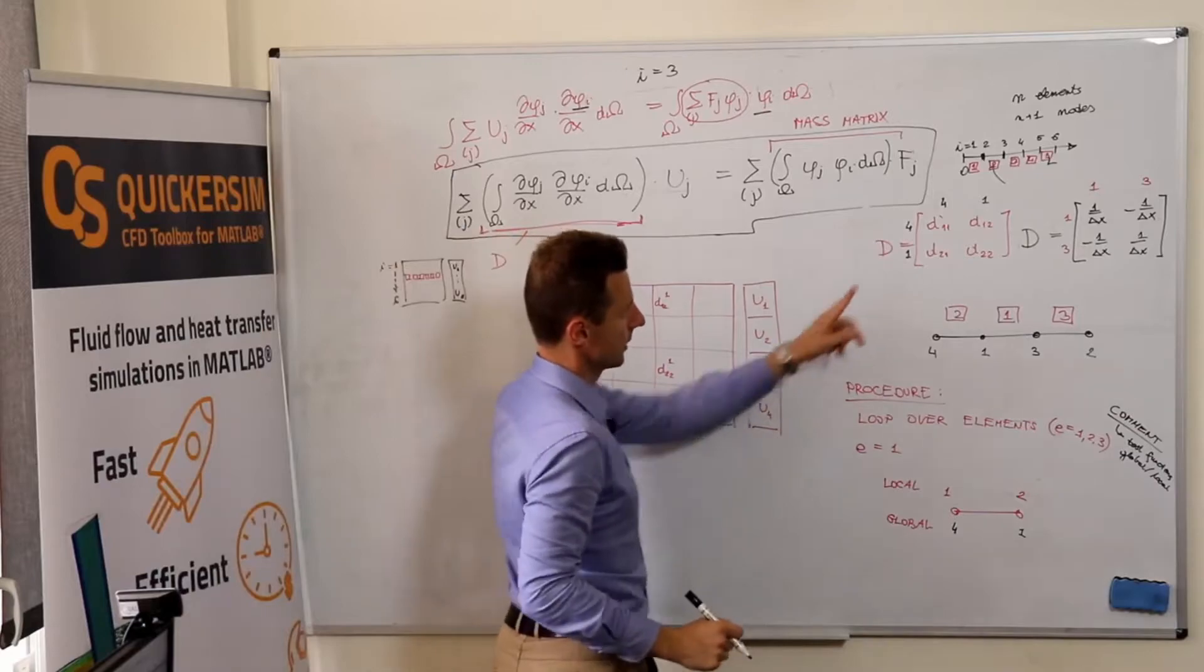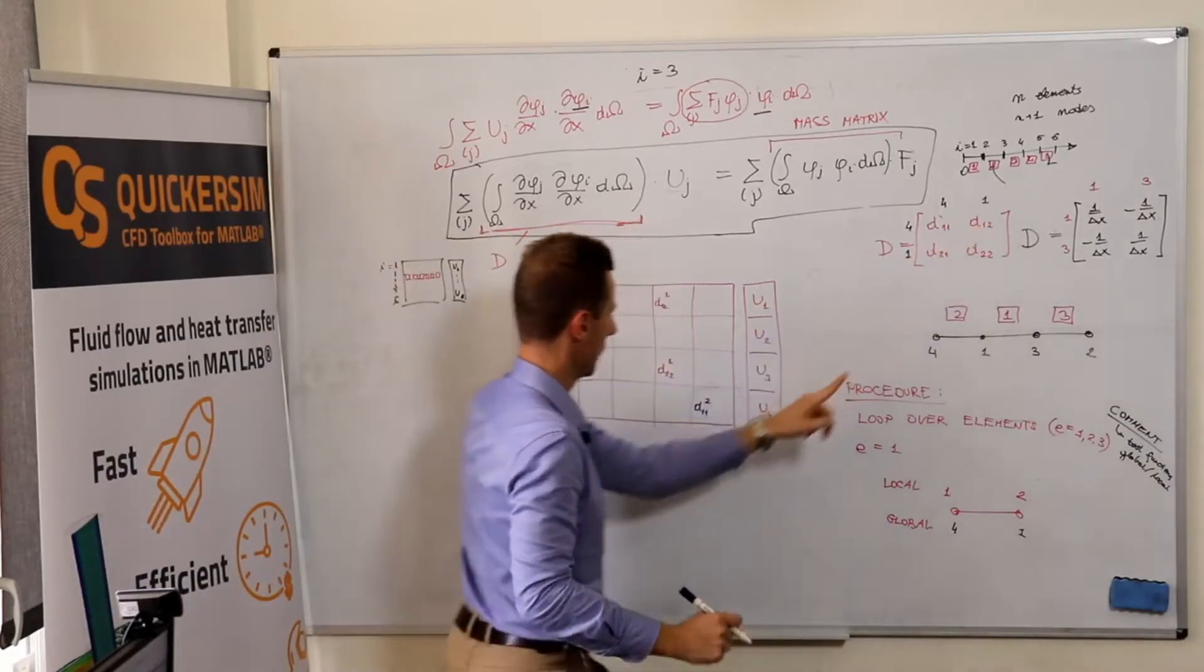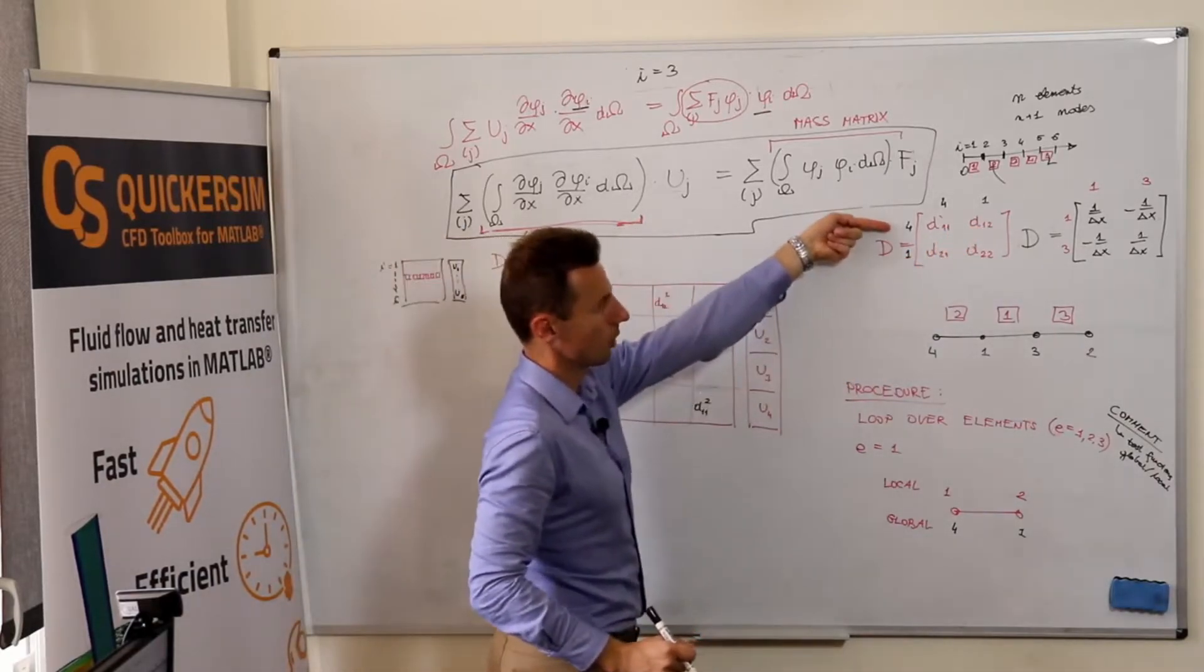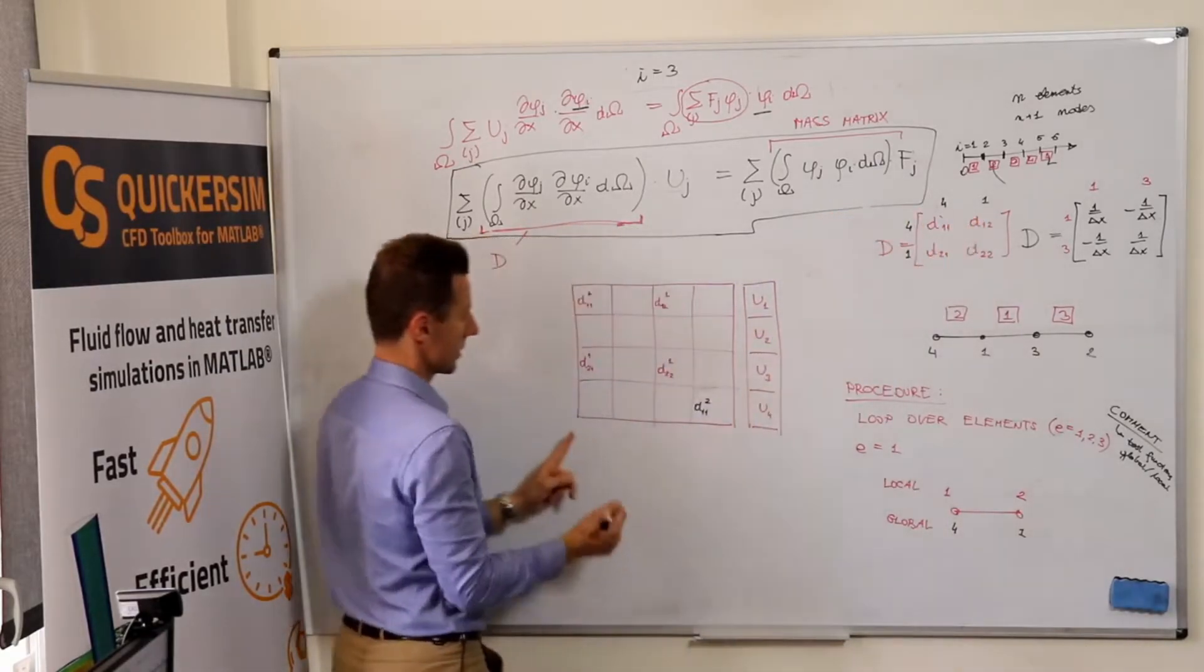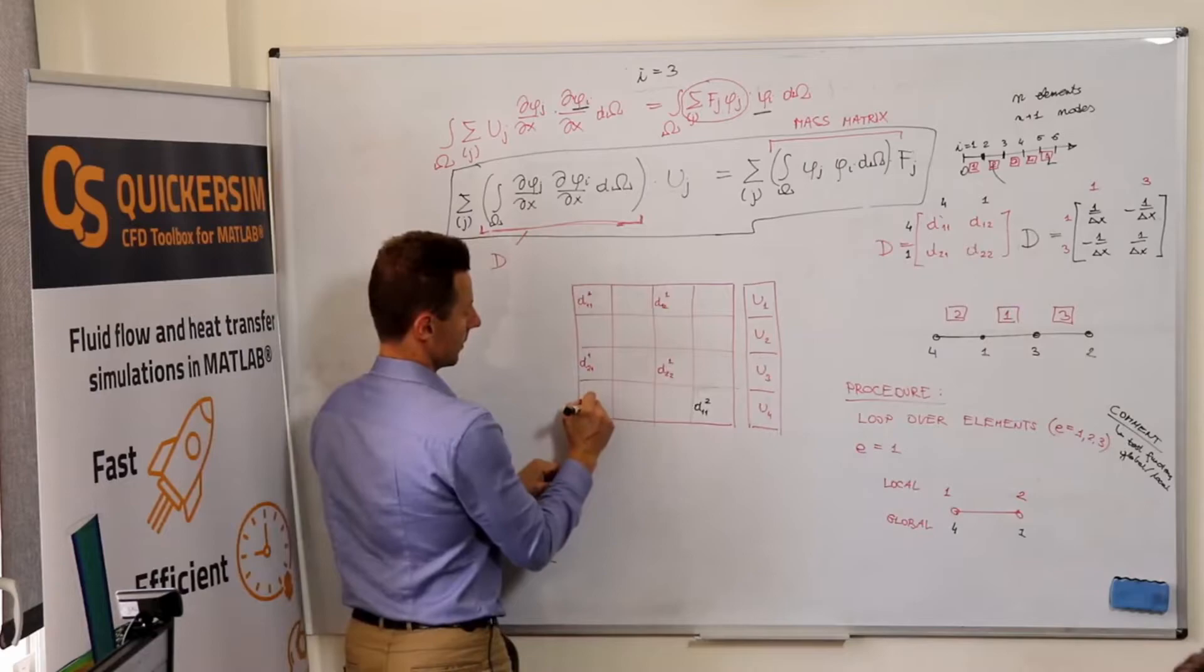And then D one-two will contribute global row four, global column one. So here D one-two, two.